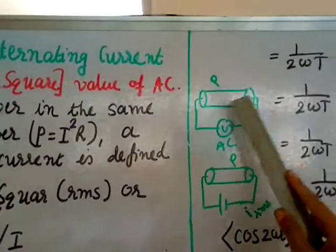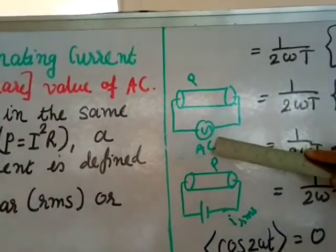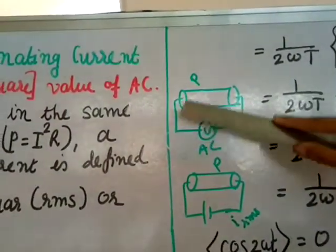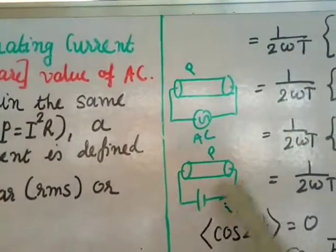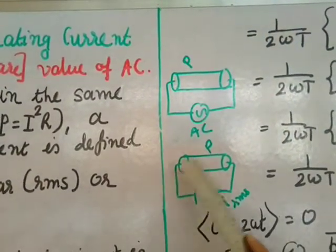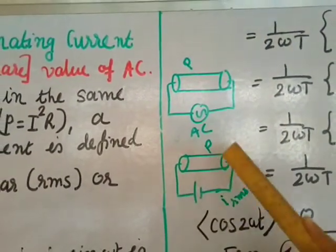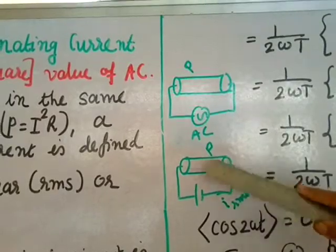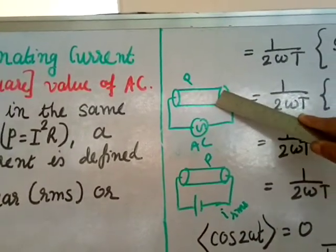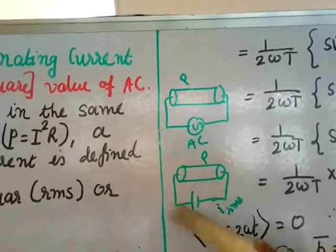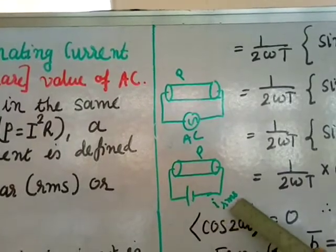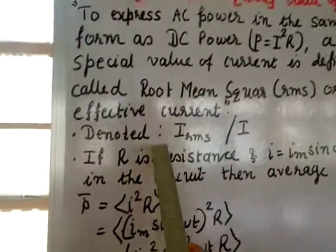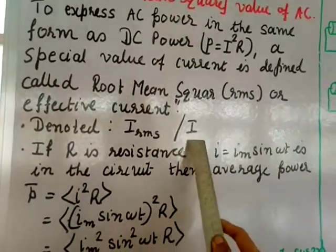Suppose you have a conductor connected to an AC source — there will be some power here. Now suppose the same conductor is connected to a DC source; we consider that the power supplied is the same. The current flowing in the DC case is called I_RMS, or RMS current. It is denoted by I_RMS or capital I.